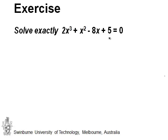Let's try the divisors of 5, which are negative 1, 1, negative 5, and 5. So for example, if we try x equal to 1, we get 2 times 1, which is 2, plus 1 is 3, minus 8 is negative 5, plus 5 is actually 0. So this has worked.